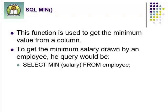The next function is MIN. It is the opposite of the MAX function. The MIN function will return the minimum value from the set of values in a column — because a column contains a set of values. For example, to get the minimum salary drawn by an employee, the query will be: SELECT MIN(salary) FROM employee. Note that all these SQL functions — MIN, MAX, COUNT — take a whole column as input, not a single value, and they return a single value.